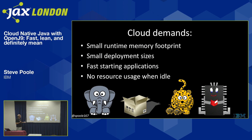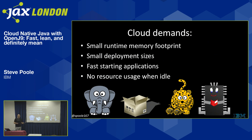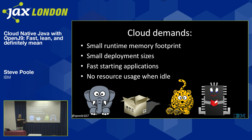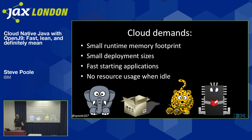Cloud says: small footprint please - the less memory you use the cheaper you are. Small deployment sizes - I want little tiny Docker images, not big fat Docker images or big fat WARs because that costs time to deploy and you may be paying for bandwidth. And you want fast-starting applications, because all the time you're waiting for something to get up to full speed, work is coming in that could be running somewhere else. When you're not busy, you don't want to use resource - give back CPU and memory, because that may give you a benefit.